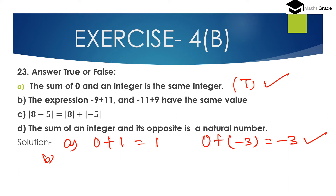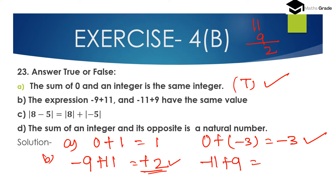Part B: The expressions (minus 9 plus 11) and (minus 11 plus 9) have the same value. For minus 9 plus 11: with different signs, subtract smaller from bigger — 11 minus 9 is 2 — and place the sign of the bigger integer (positive), giving plus 2. For minus 11 plus 9: 11 minus 9 is 2, and the bigger integer is negative, giving minus 2. Since 2 ≠ minus 2, this is FALSE.